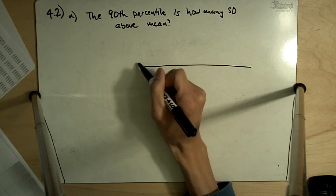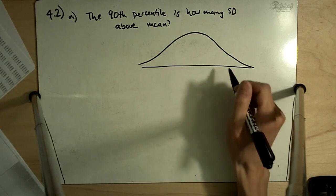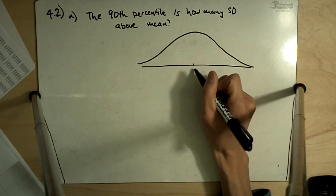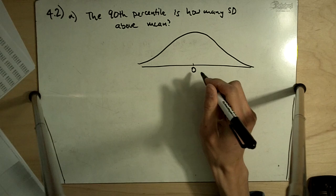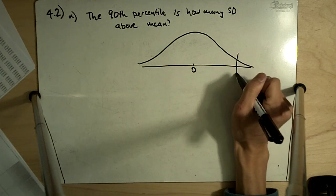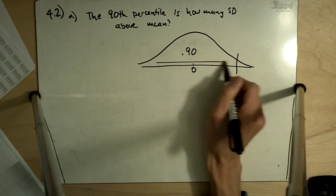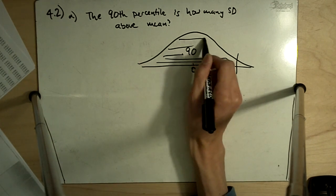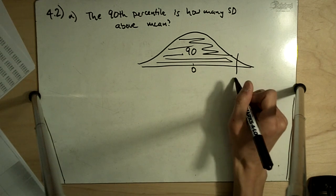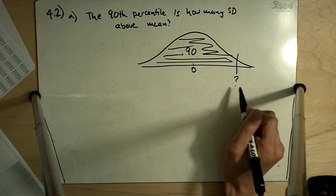So in this picture, this is our normal distribution. The mean is at zero, or centered at zero standard deviations, and we want to know if we get 90% of the population to the left of this cutoff line, how many standard deviations this cutoff line is.